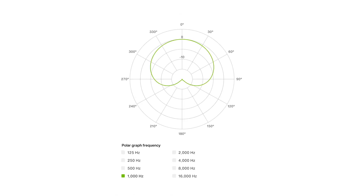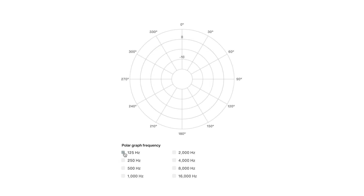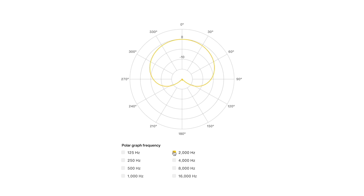Polar patterns have different directional properties at different frequencies. As you can see, this cardioid opens up and becomes less directional at lower frequencies, and more directional at high frequencies.